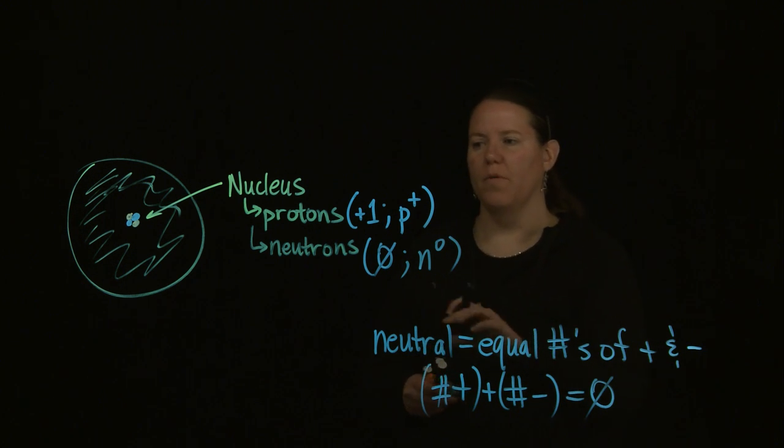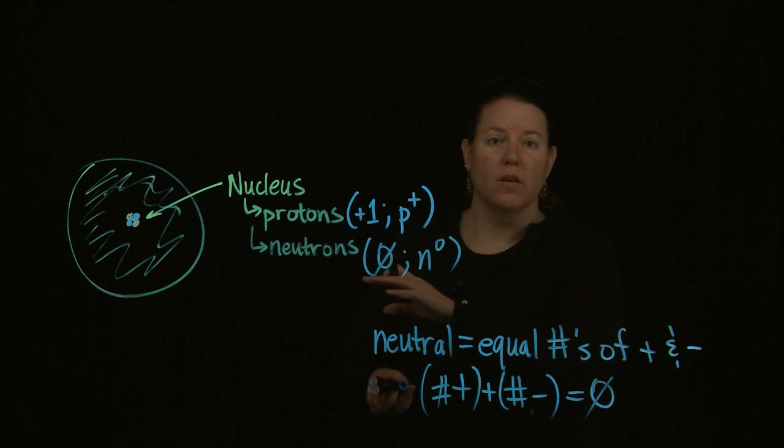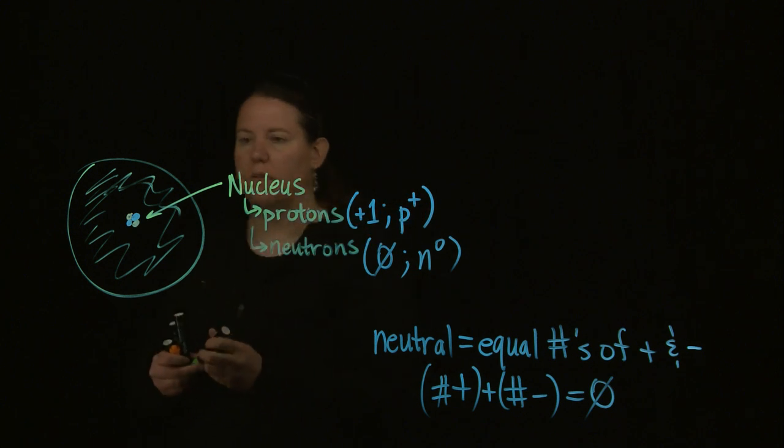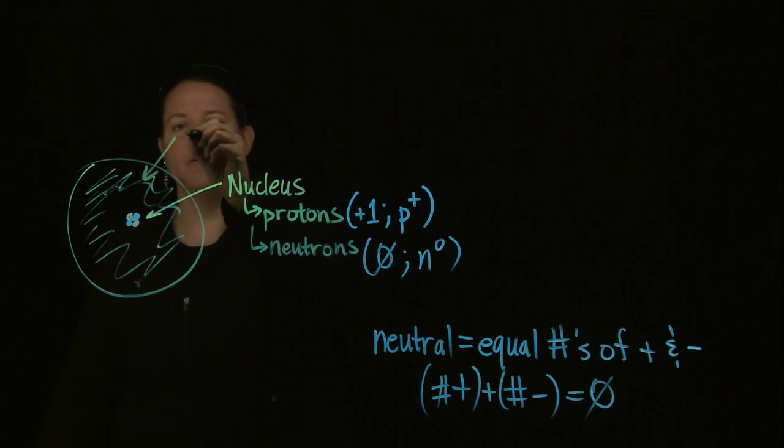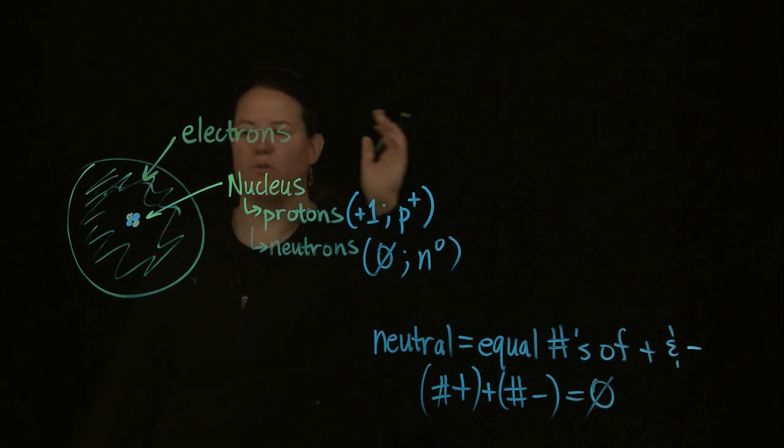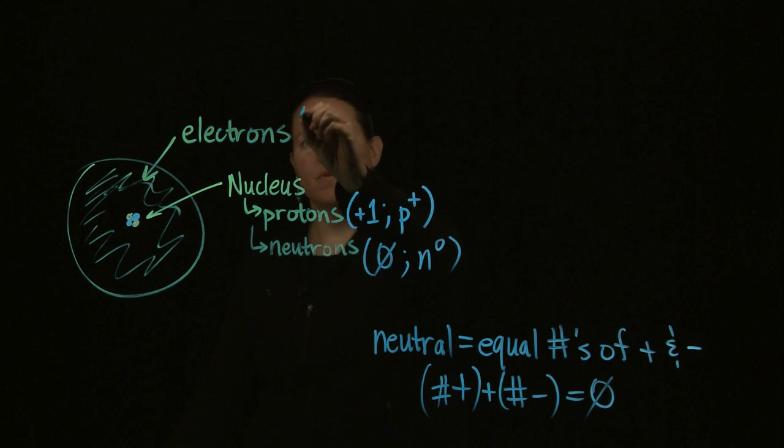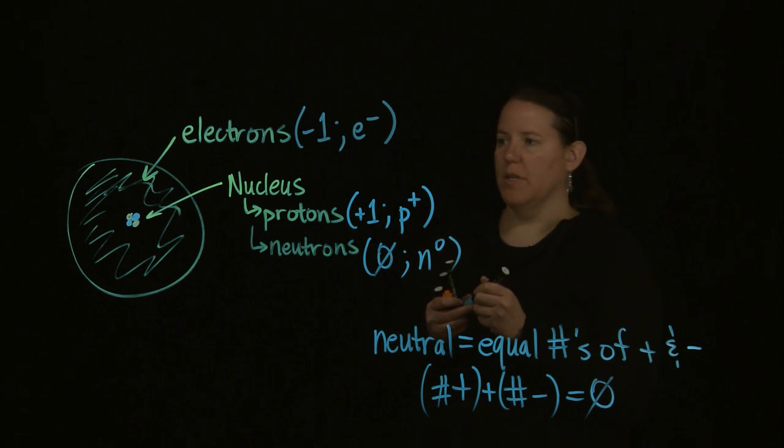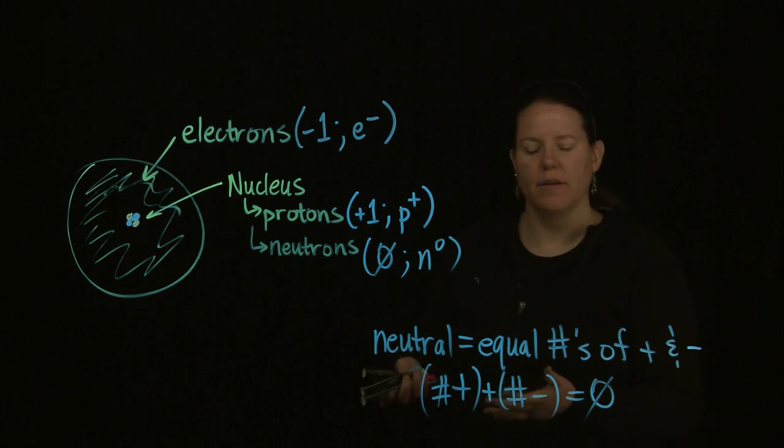The nucleus is at the center of the atom. Both of these have relative mass—about one amu each, and that's where the vast majority of the mass is held. Hanging around in the electron cloud is this last subatomic particle called electrons. Electrons have a minus charge, a minus one charge, and are designated as e-minuses.